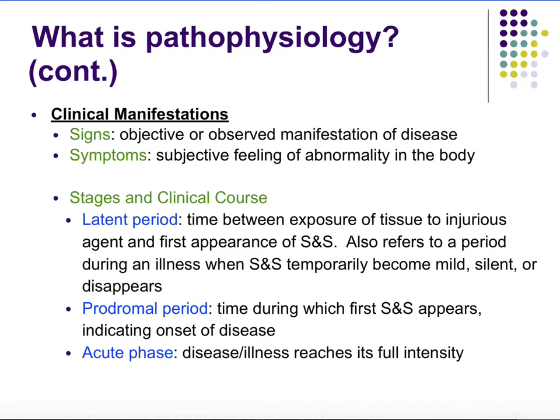We also have different stages and clinical courses. The latent period is the time from initial exposure to the injurious agent to when you first start to see signs and symptoms — the period in which you don't really see anything going on yet, but the injury is actually starting to occur inside your body. Then we have the prodromal period — this is when you first start to see signs and symptoms. As soon as you start to feel sick, like you have a headache and feel lethargic, you're already in the prodromal stage; the latent period has already passed.